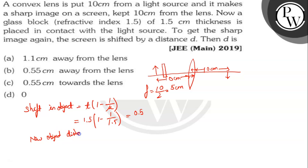Shift is 0.5, so 10 - 0.5 = 9.5 cm. New object distance is 9.5 cm.